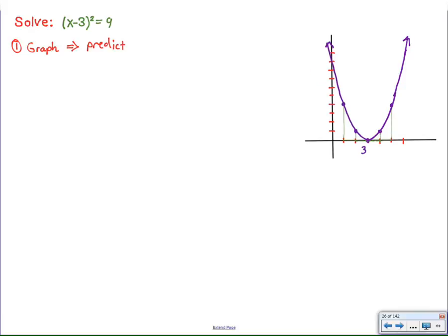So then, we also, after labeling the vertex, can graph the line y equals 9, which is right here. And then we can use the graph to make predictions, and it appears as though when x equals 0 or when x equals 6, we'll have solutions to this equation.